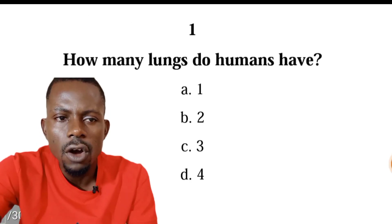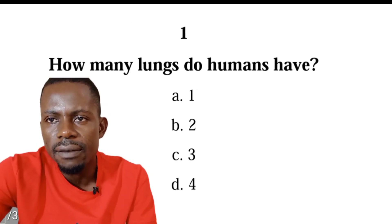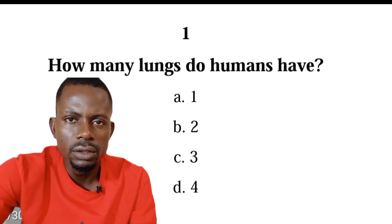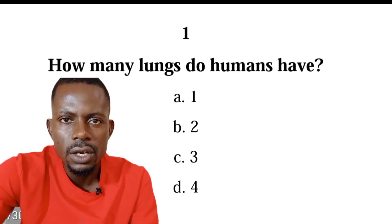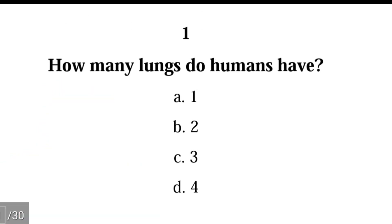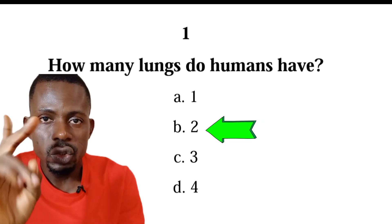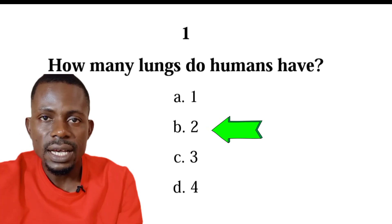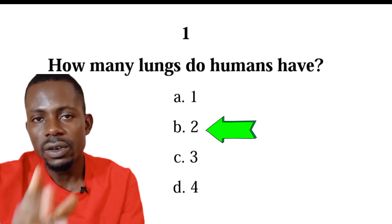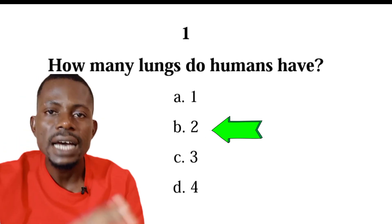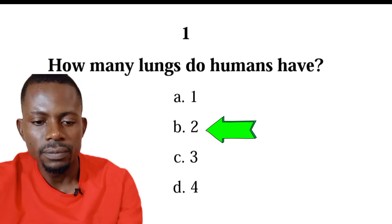How many lungs do humans have? Is it one, two, three, or four? The correct answer is two. So humans have two lungs — we have the right lung and the left lung.